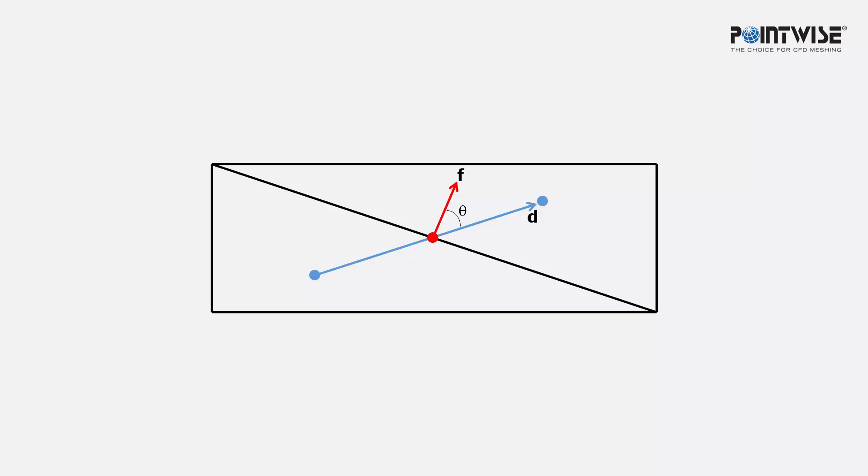at the angular deviation between a vector connecting two adjacent cell centroids and their shared face normal vector, as you see here on the screen. So we've got this vector d in blue, which is the vector connecting two adjacent cell centroids, and this face normal vector for the shared face.